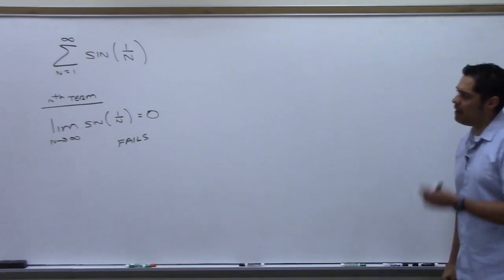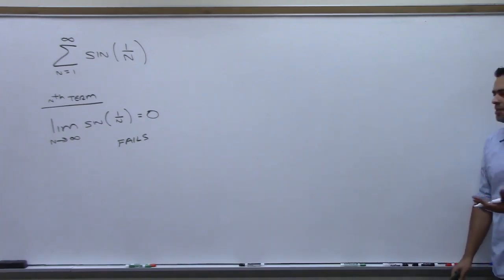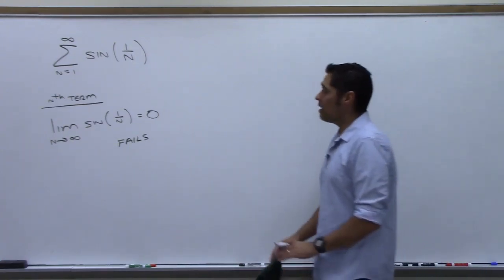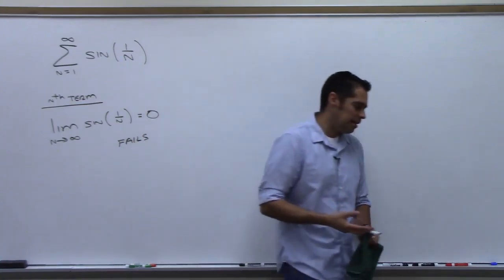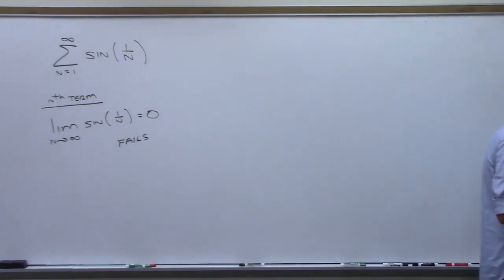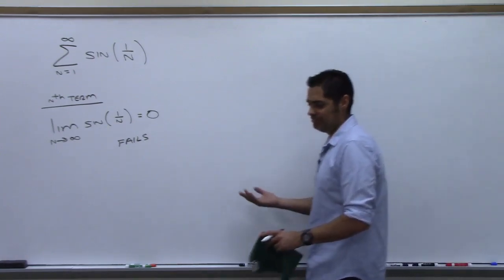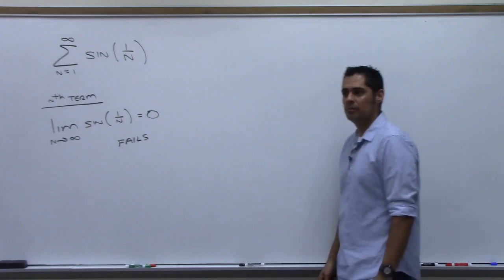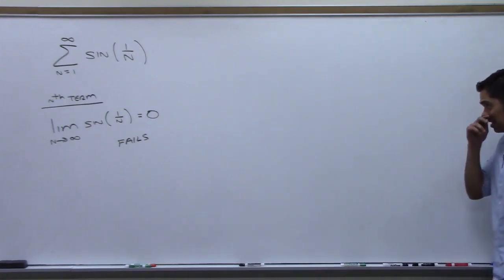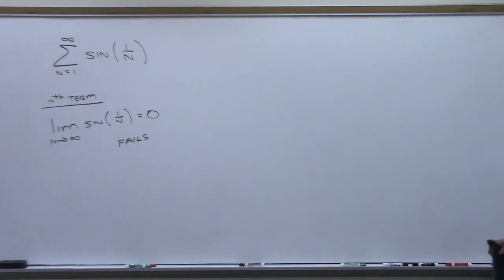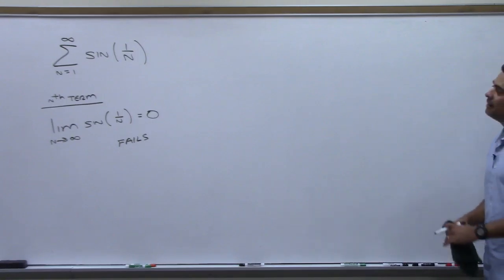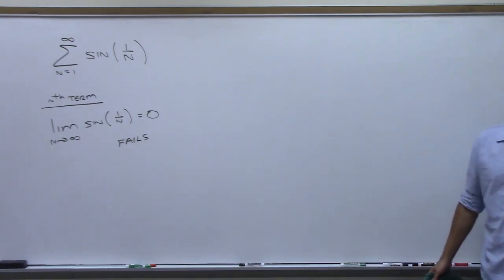The nth term test fails. But what do we compare sine(1/n) to? This doesn't look like anything we've seen — it's not geometric, not harmonic, not a p-series. And integrating it is not something I want to do.